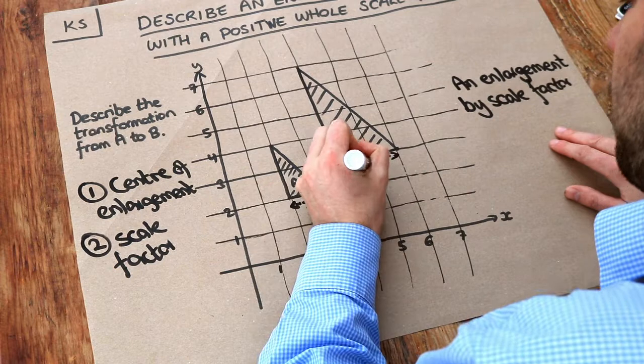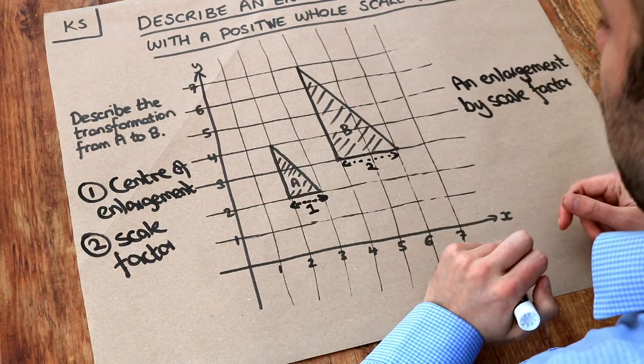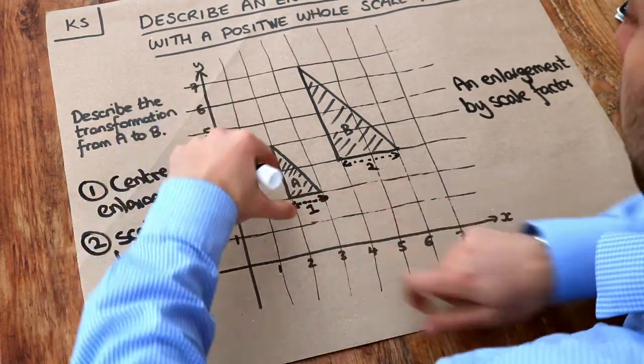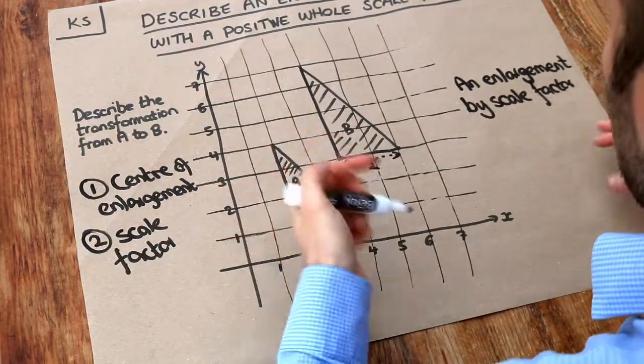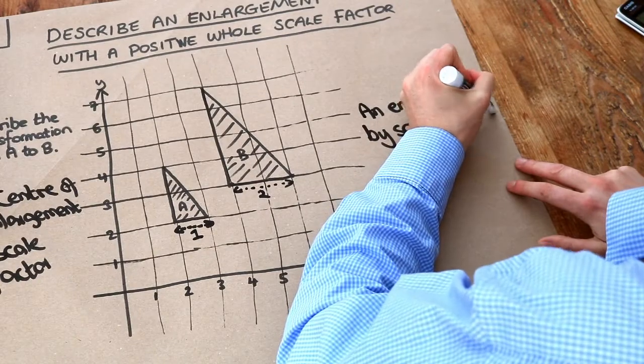So we can therefore see the shape is becoming twice as wide. It's also becoming twice as tall. Because that's two. That's four squares. It's becoming twice as tall, twice as wide. We say that the scale factor is two.